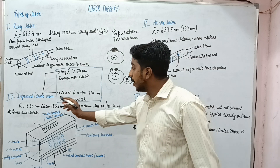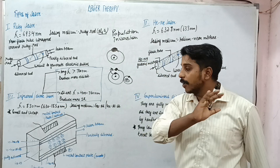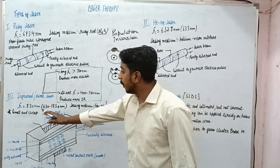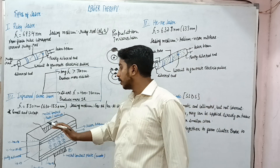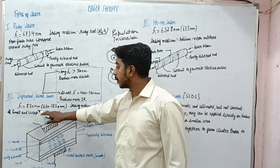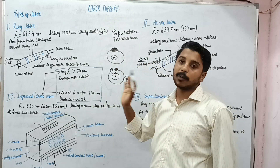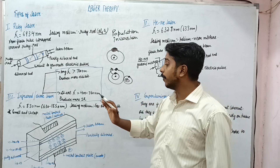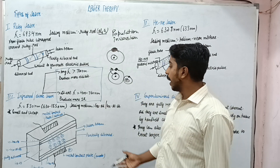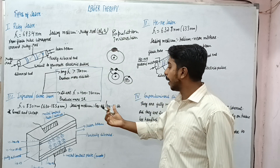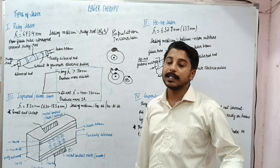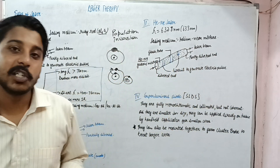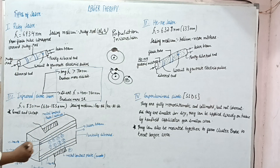Next is the infrared laser or diode laser. Its wavelength is 830 nanometers, and in some books it is written as ranging from 630 to 1550 nanometers. Its medium is gallium and arsenic, or gallium-aluminium arsenic — that is the PN junction diode. The diagram for this laser is quite easy to understand.